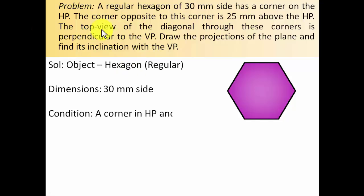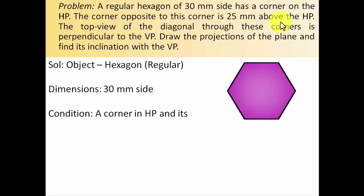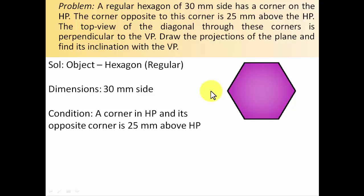You can clearly see that this hexagon has six corners. Out of those six corners, one corner — let's say this one — is always resting or in contact with the horizontal plane. And there is one more condition: the corner opposite to this corner is 25 millimeters above the horizontal plane. There is another condition that says the top view of the diagonal through these corners is perpendicular to the VP — at an angle of 90 degrees with the vertical plane.